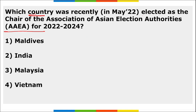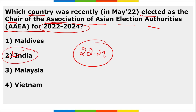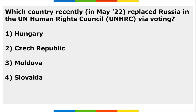India was elected as the Chair of the Association of Asian Election Authorities for 2022–2024, represented by the Election Commission of India. Czech Republic replaced Russia in the UN Human Rights Council through a voting process.